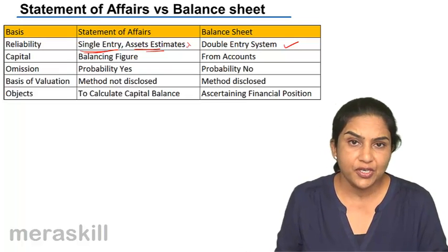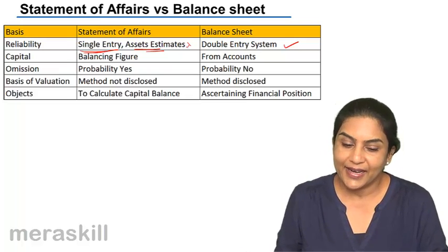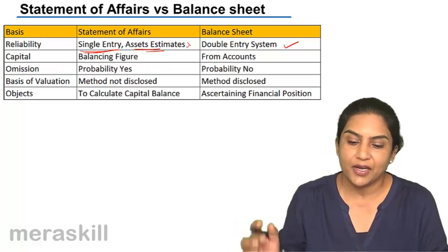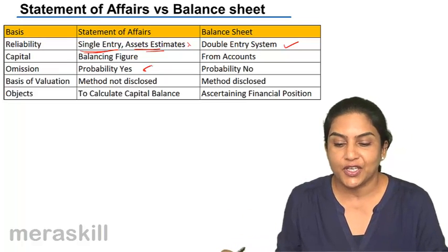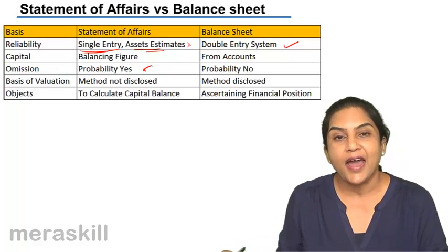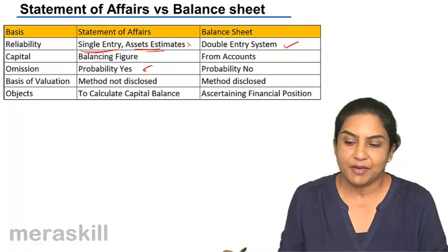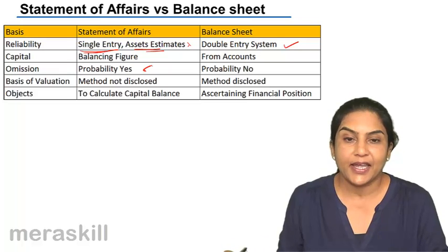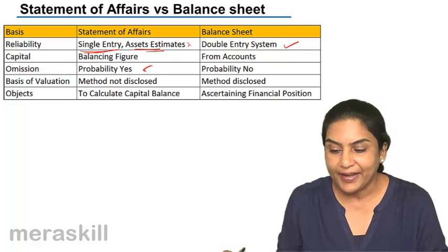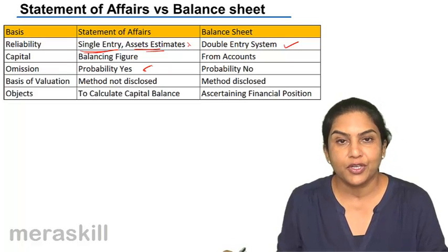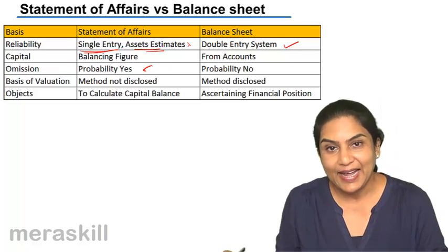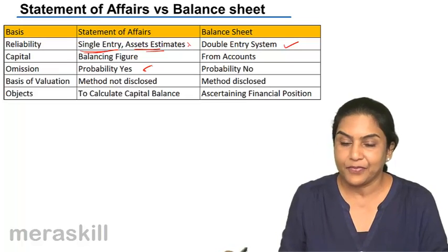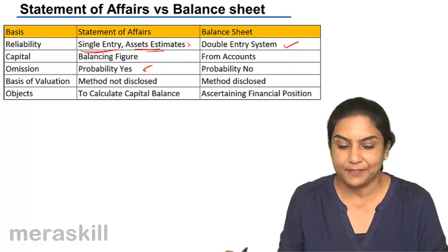Omission: there is a greater chance of errors and omission in case of single entry, and therefore in the statement of affairs. But in case of a double entry being followed, the chances are very little, far less.